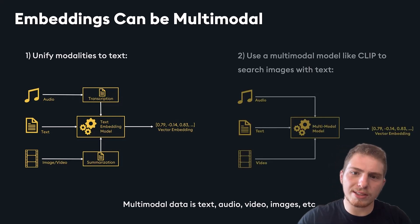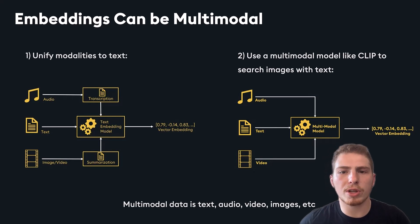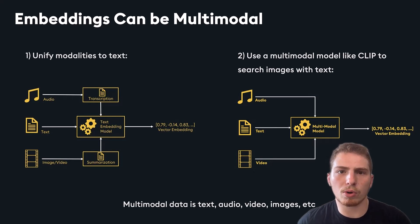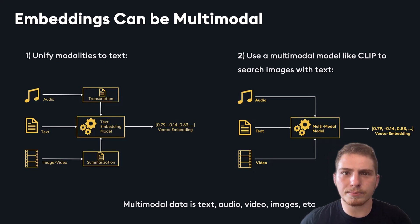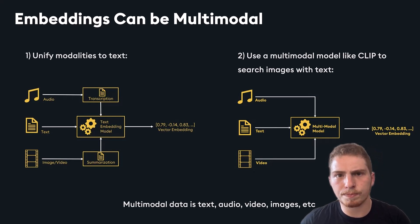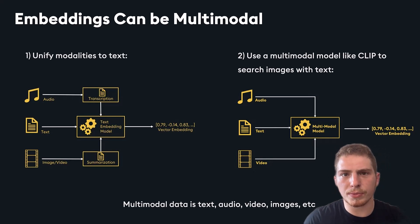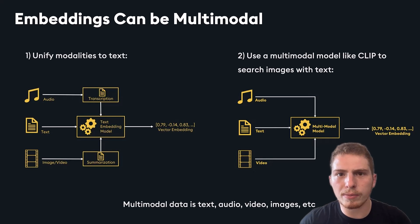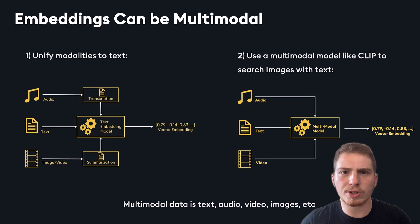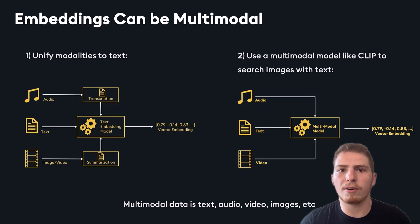For some types of data, unifying to text doesn't work very effectively, so we have another option: using a multimodal model. A multimodal model can generate vectors from different types of data. For example, CLIP is a multimodal model that specializes in working with both image data and text data. If you had a dataset of 10 million images, CLIP can create a vector for each one. Then when a user generates a query like 'a cat in a green hat,' you can turn that into a vector using the same embedding model and search your database to find all matching images.